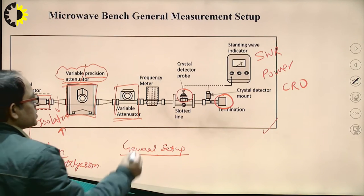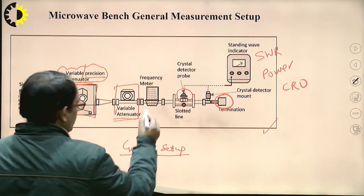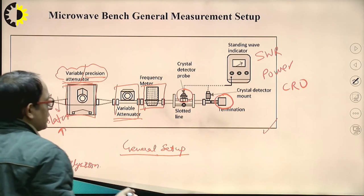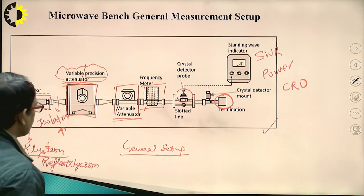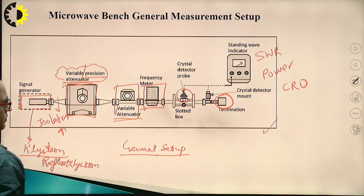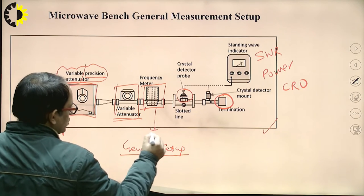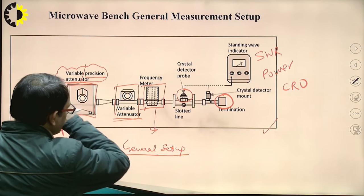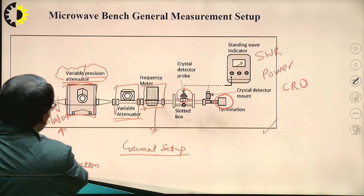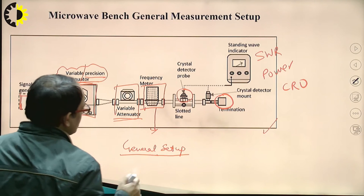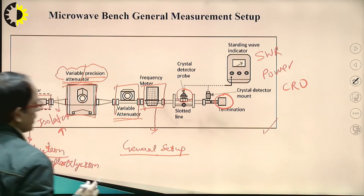The next one is the frequency meter. This frequency meter measures the frequency of the signal generated by the signal generator.